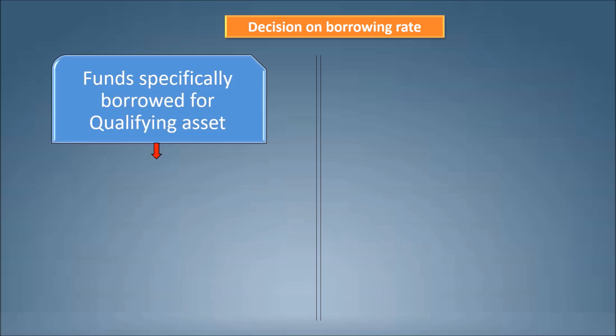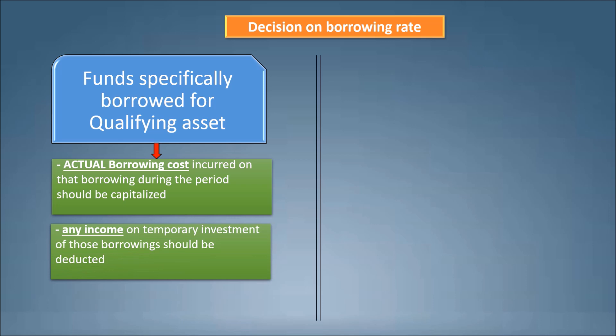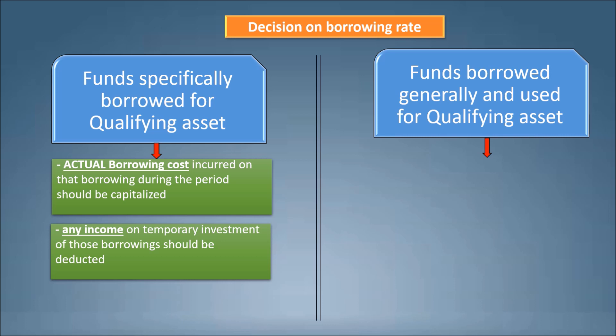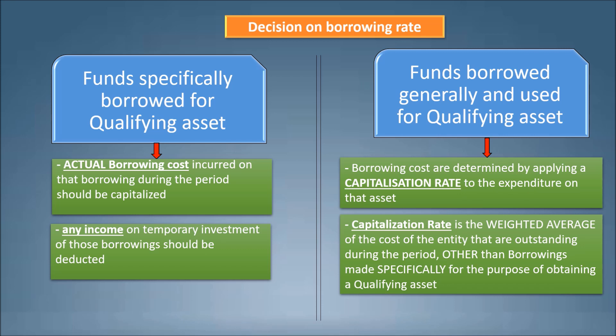If funds are borrowed specifically for the purpose of obtaining a qualifying asset, the actual borrowing cost incurred on that borrowing during the period should be capitalized, and any income on temporary investment of those borrowings should be deducted. If funds are borrowed generally and used for a qualifying asset, borrowing costs are determined by applying a capitalization rate to the expenditure on that asset. The capitalization rate is the weighted average of the borrowing costs of the entity that are outstanding during the period, other than borrowings made specifically for obtaining a qualifying asset.